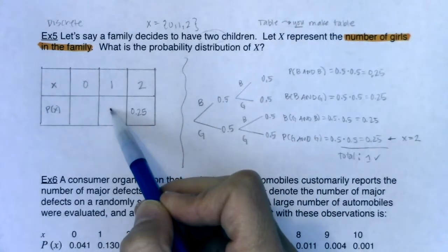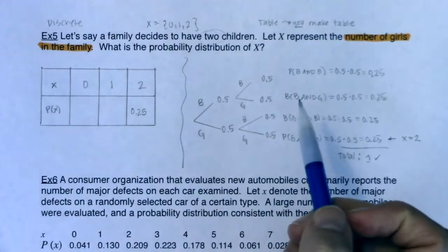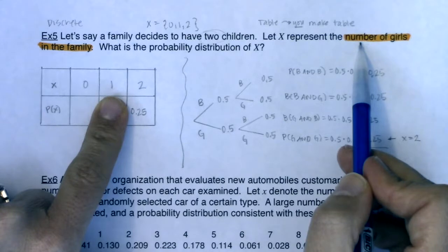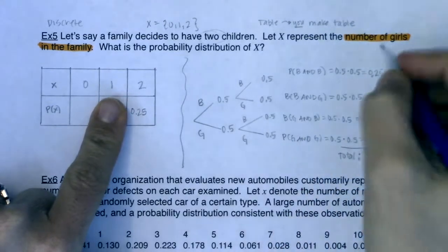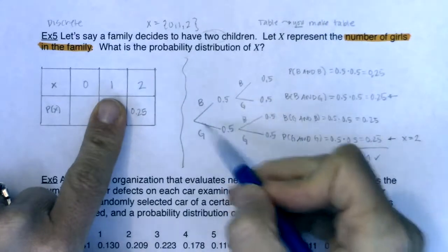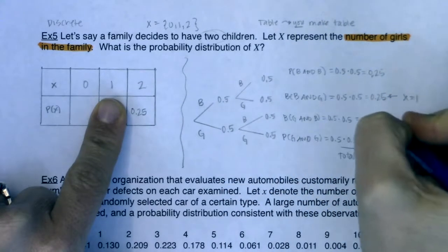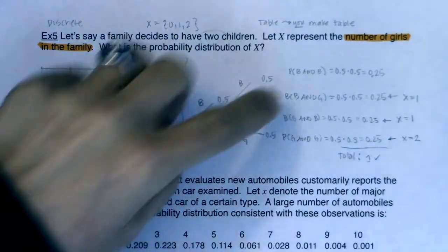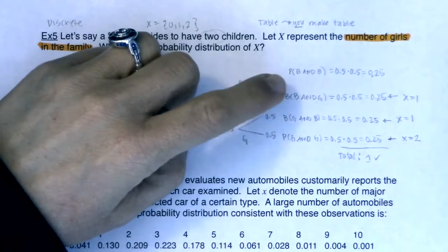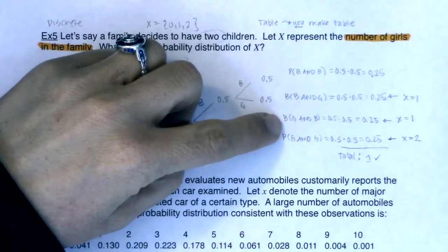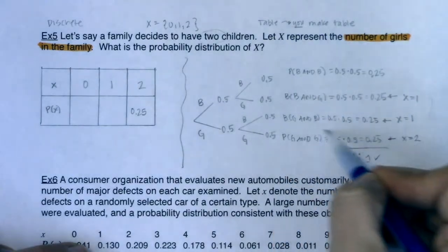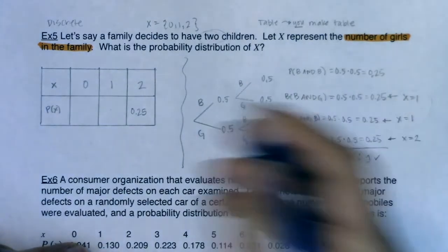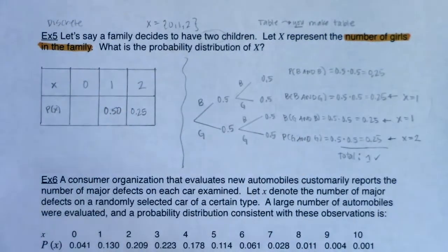Now let's try x equal to 1 — meaning 1 girl. It could happen two ways: a girl and then a boy, or a boy and then a girl. So both of these branches — top-bottom and bottom-top — correspond to x equaling 1. But these are disjoint events: they can't happen at the same time. Since these are disjoint branches, we add them, going back to Formula 1 from chapter 3. So the probability is 50%. If you're having two kids, there's a 50% chance of having exactly one girl.